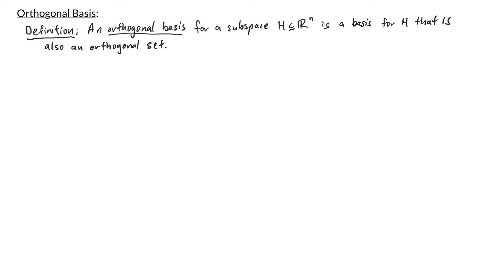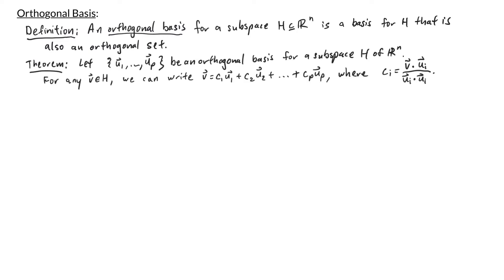This is illustrated in the next theorem. Let u1 through up be an orthogonal basis for a subspace H of R^n. Then for any vector v in H, we can write v as a linear combination of u1 through up, where the weights are given by ci = (v·ui) / (ui·ui).